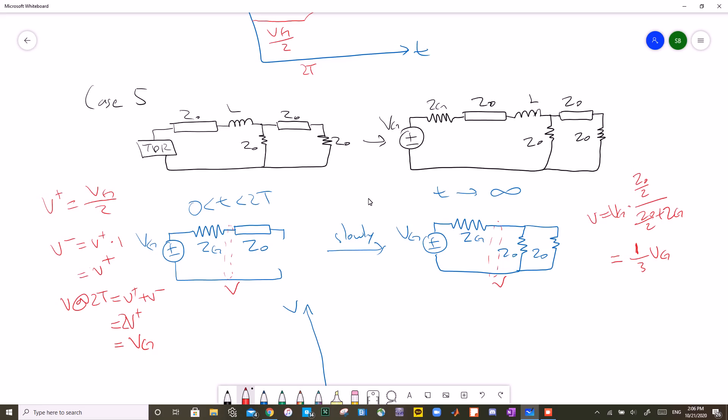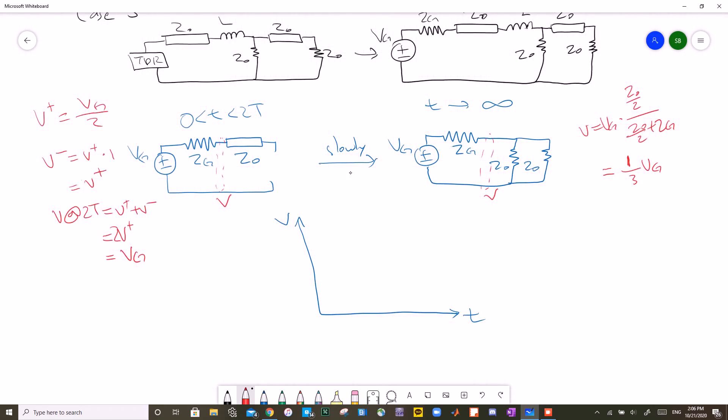And at our steady state, the inductor is now shorted, and all the transmission lines are now also shorted. And then, we also have another voltage divider equation, which gives us 1 over 3 VG. So, we'll start out at VG over 2, and at 2T, we'll see a sudden increase to VG. And it'll decrease exponentially down to the level of VG over 3. That is the graph for the final example.